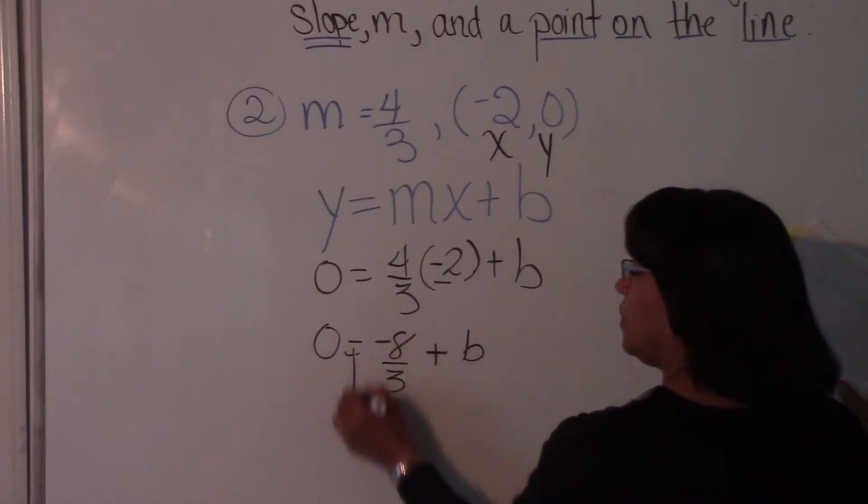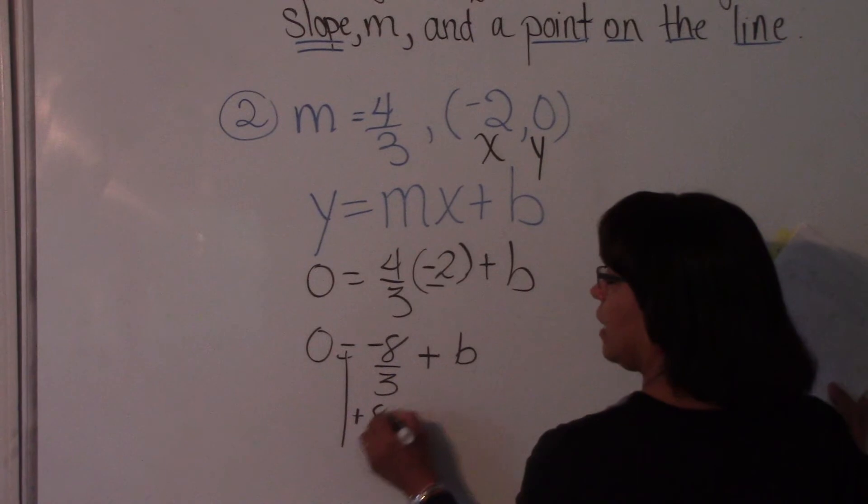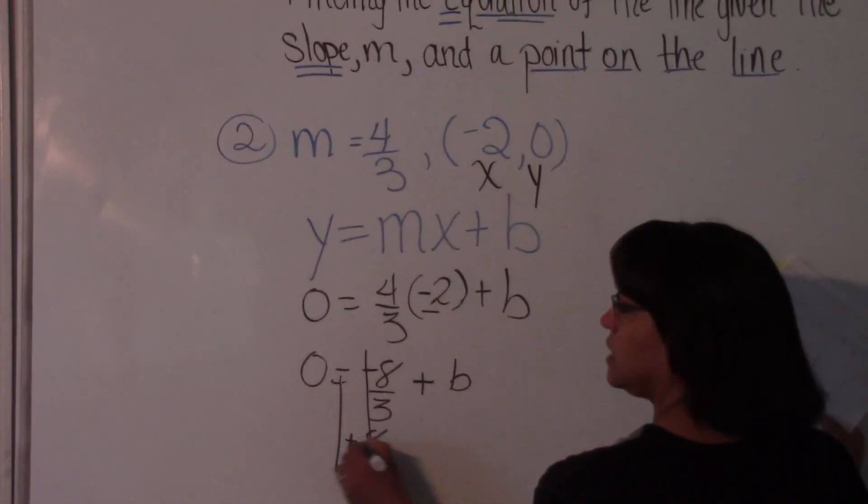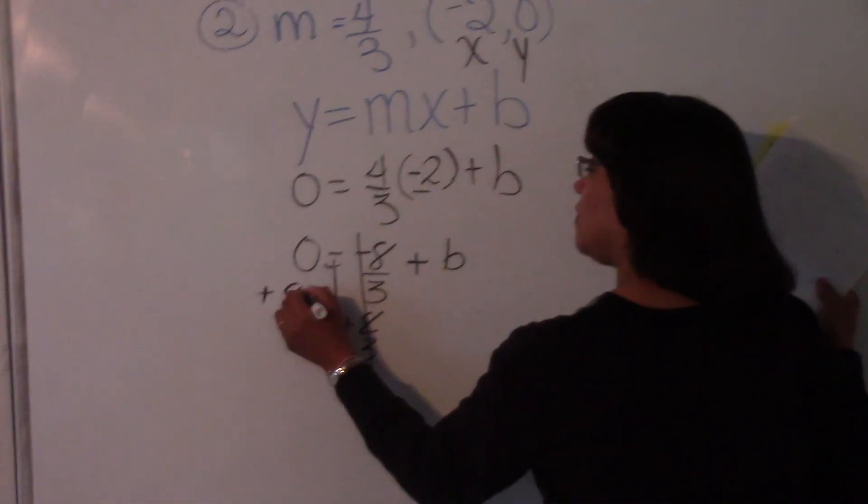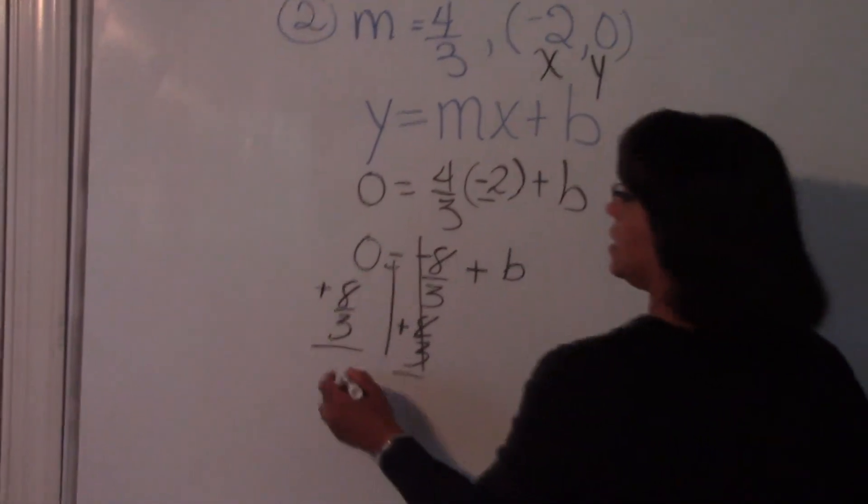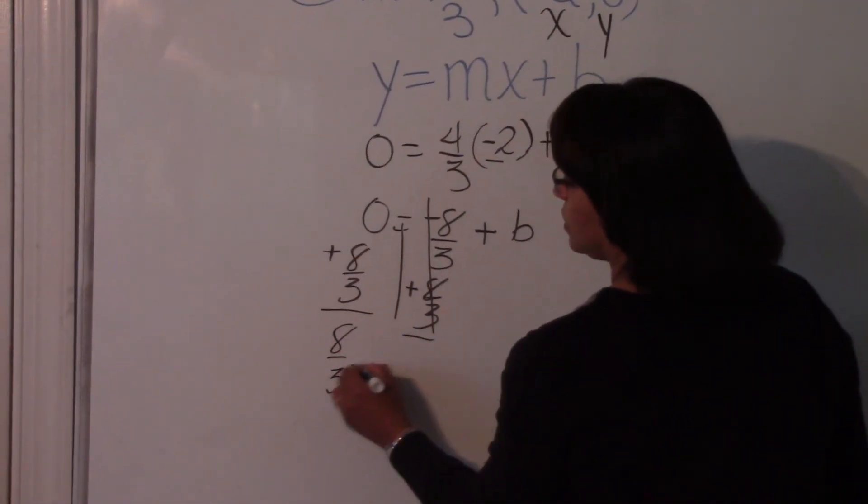Okay, so now we have to solve for b. We move our negative 8 thirds by adding 8 thirds, because the inverse operations make it go away. But we have to balance everything. So we also have to do it on the other side of our equation. So 8 thirds is equal to b.